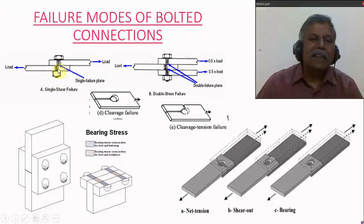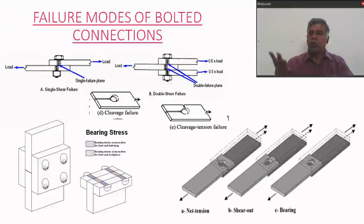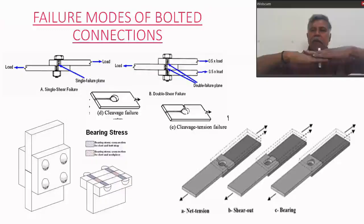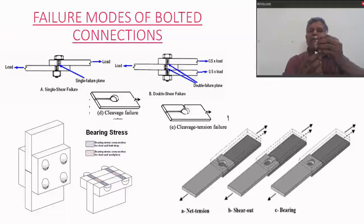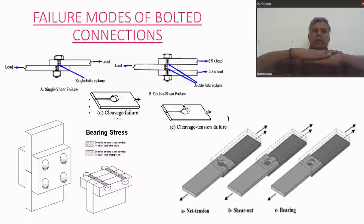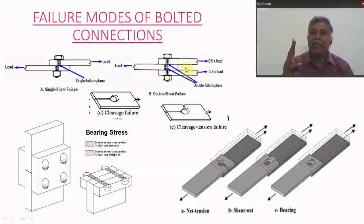The possible failure modes are as follows. Shear stresses are generated when the plates slip due to applied forces. Considering two plates joined by a bolt under tensile force, the bolt will be cut at the interface of the plates — this interface is a shear plane, and this is single shear failure. If three plates are considered where the top two plates move in one direction and the middle plate moves in the other, there are two interfaces and the bolt is cut at two locations — this is called double shear failure.